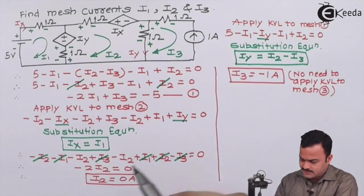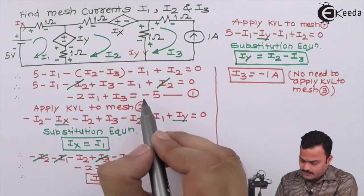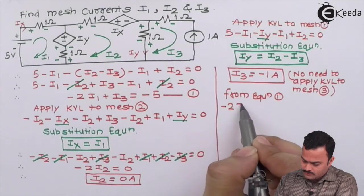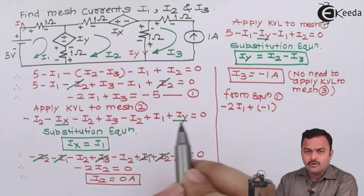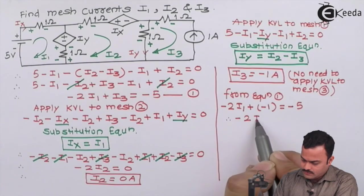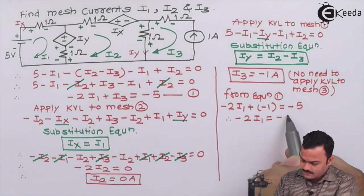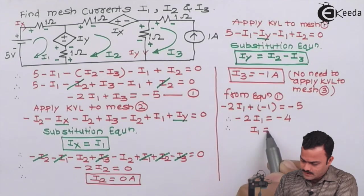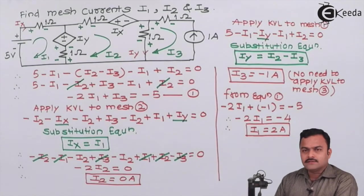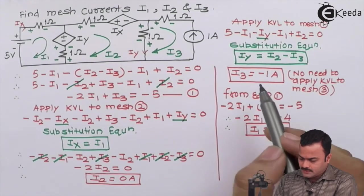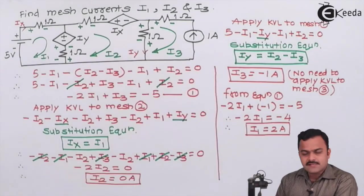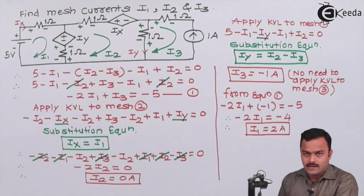Now out of the three mesh currents, two values are known: i2 = 0 ampere and i3 = minus 1 ampere. Substituting i3 = minus 1 into equation 1: minus 2i1 plus (minus 1) = minus 5, giving minus 2i1 = minus 4, so i1 = 2 ampere. The final mesh currents are: i1 = 2 ampere, i2 = 0 ampere, i3 = minus 1 ampere. We have solved all three meshes successfully with two dependent sources using mesh analysis and substitution equations wherever required.